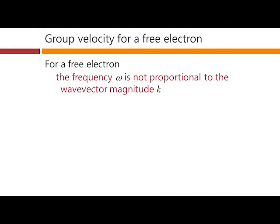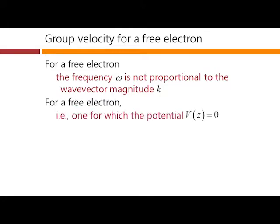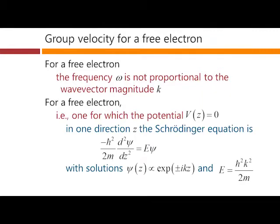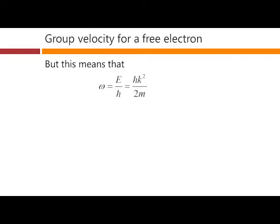For a free electron, the frequency ω is not proportional to the wave vector magnitude k. For a free electron, that is one for which the potential v is essentially constant, basically zero everywhere, then we know what our Schrödinger equation would look like. It becomes very simple. And we know the solutions to this equation. They're basically e to the plus or minus ikz, if we're looking at the spatial part. The key point is that the energy here is proportional to k². And that means that if we look at the frequency associated with that energy, which would be the energy divided by ℏ, we see that frequency is proportional to k², and not proportional to k.